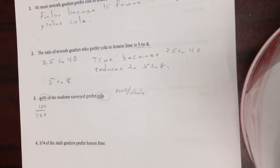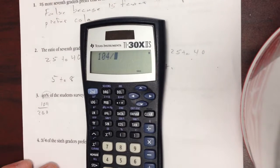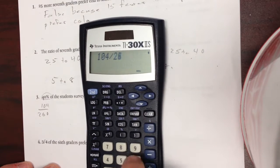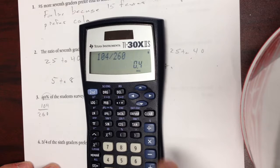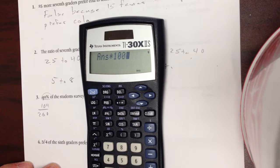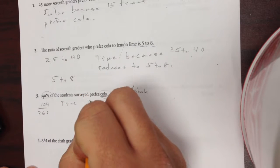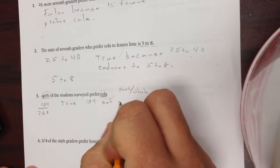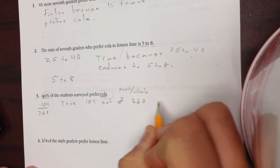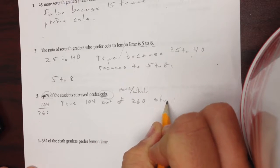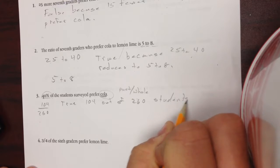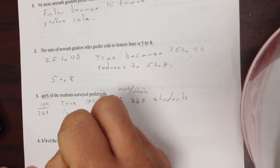So I take my fraction, change it to a percent. I divide 104 divided by 260. That gives me 0.4 times by 100 to make it a percent. 40%. So it's true. So 104 out of 260 students is 40%.